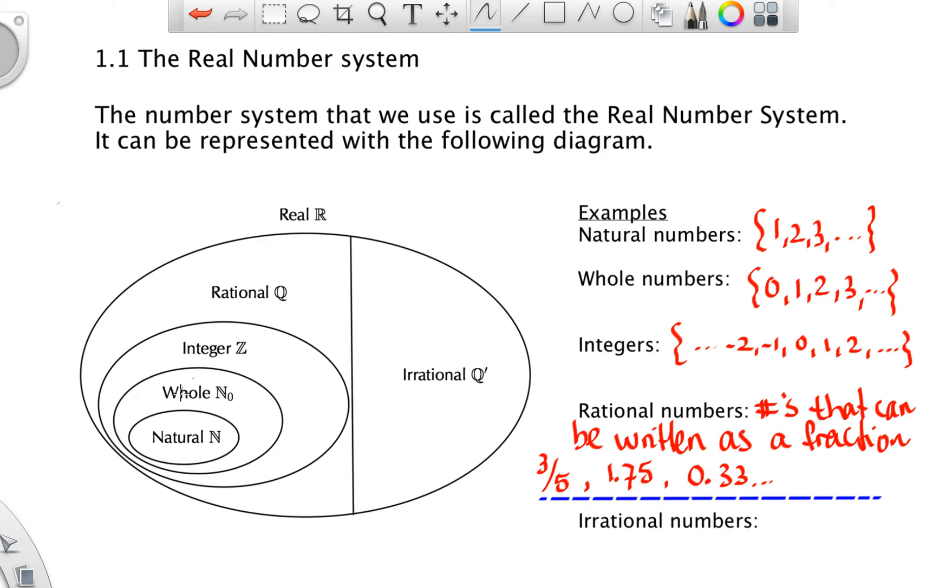Now notice that all of the natural, all of the whole, all of the integers are part of our rational number set. So negative 4 can be written as a fraction. There you go.